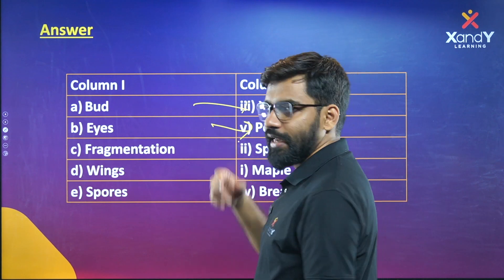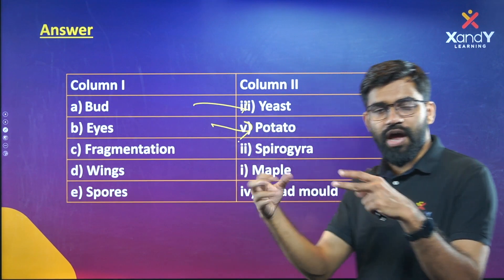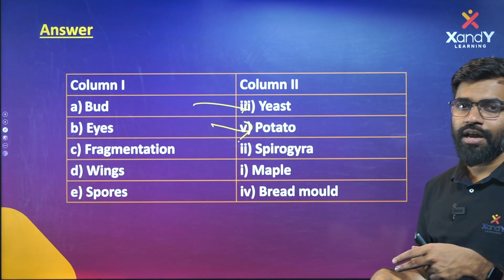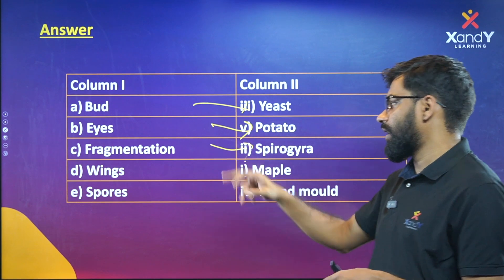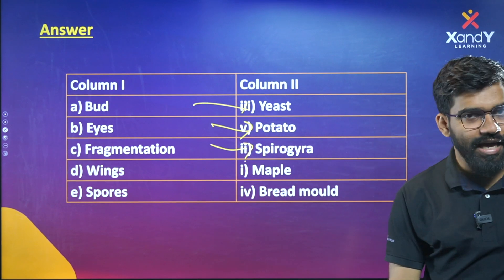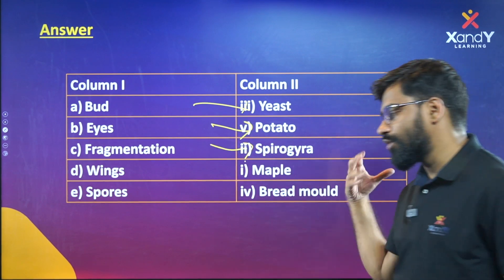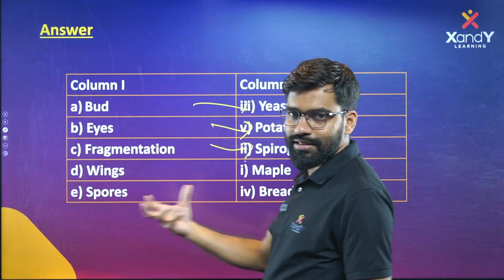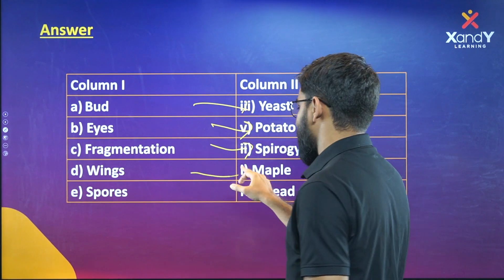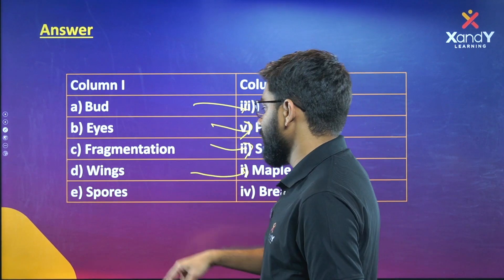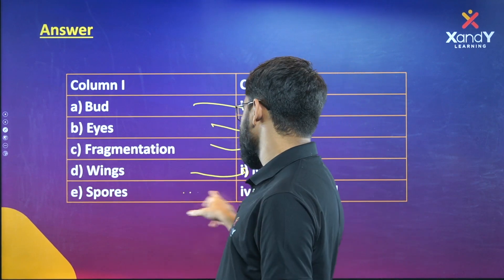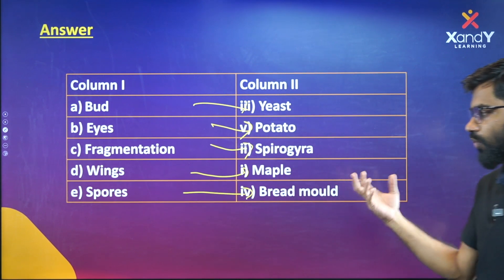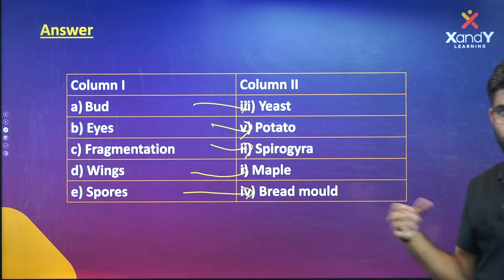Fragmentation — one fragment of the organism, like Spirogyra, a type of algae. Then Spores — Spores is matched with Bread Mold.